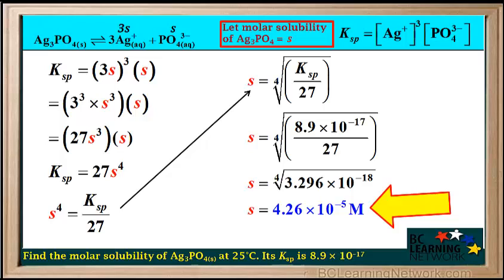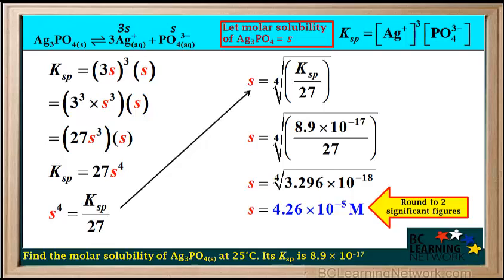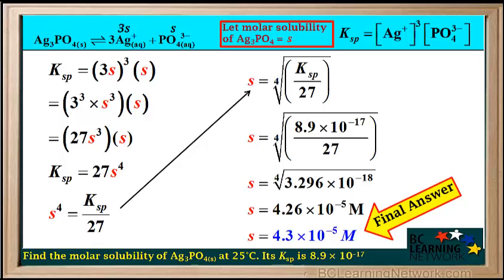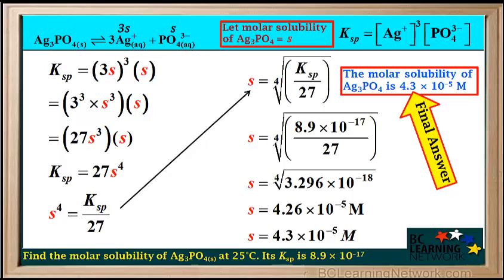Because s represents molar concentration, we add the unit M for molarity. However, the original Ksp was given to us in two significant figures, so we must round the answer to two significant figures. The final answer is 4.3 times 10 to the negative 5th molar. The molar solubility of silver phosphate, Ag3PO4, is equal to 4.3 times 10 to the negative 5th molar.